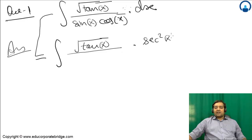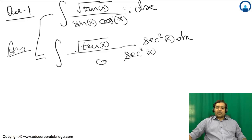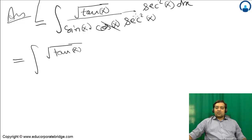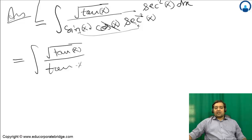This is equal to root of tan(x). The sec cancels with cos — sin upon cos is nothing but tan(x) — so this is what we get.